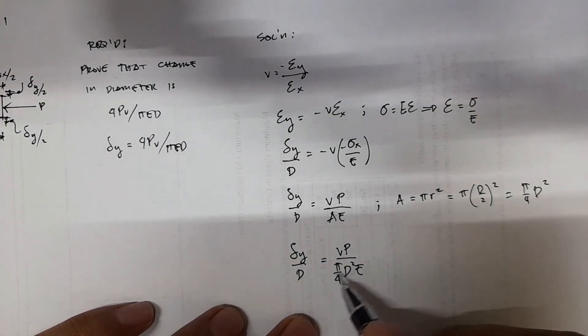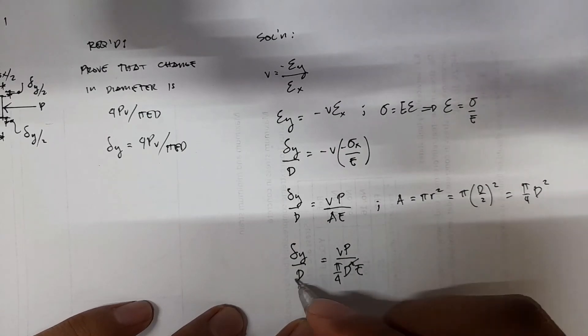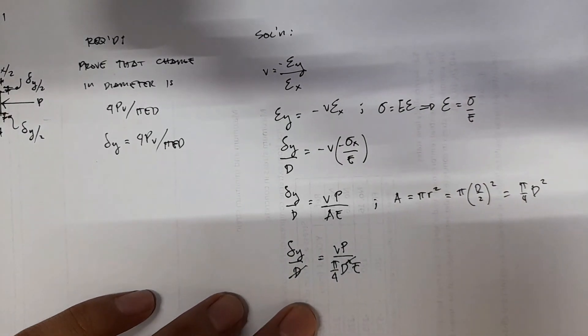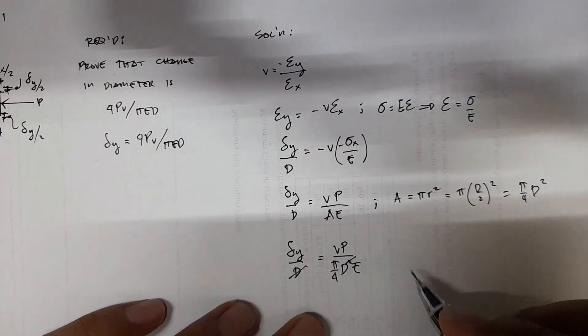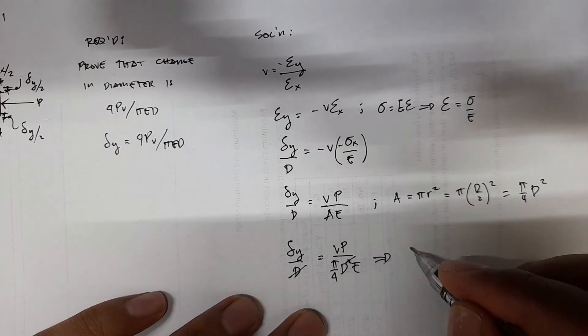So you have two d terms here on both sides. This one cancels out. And then the denominator π/4 can be placed in the numerator, and then you will have deformation y which is equal to...